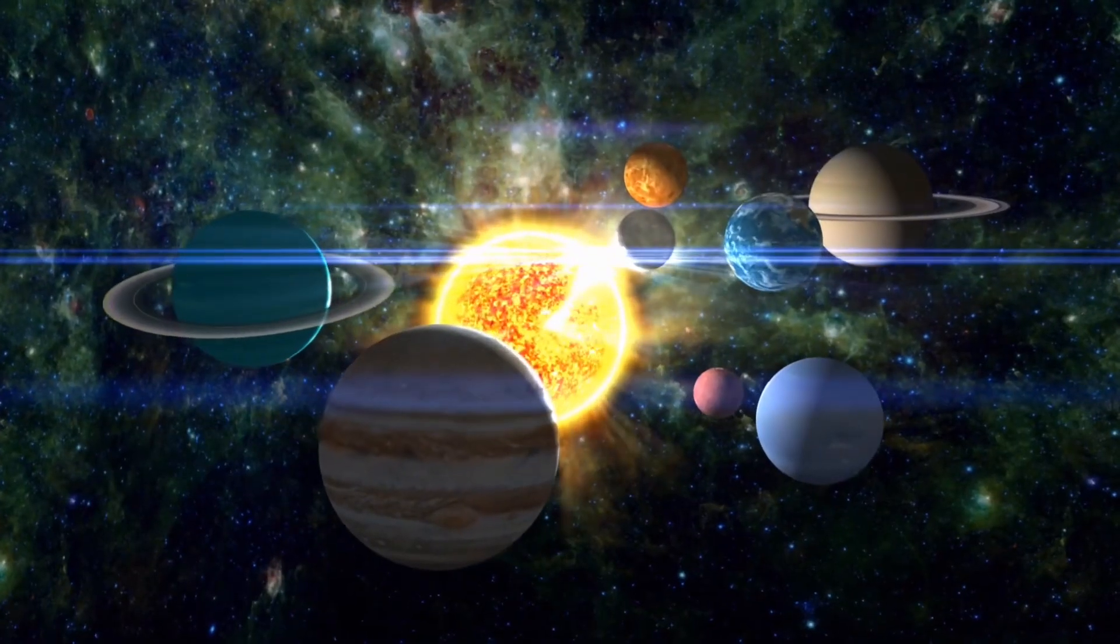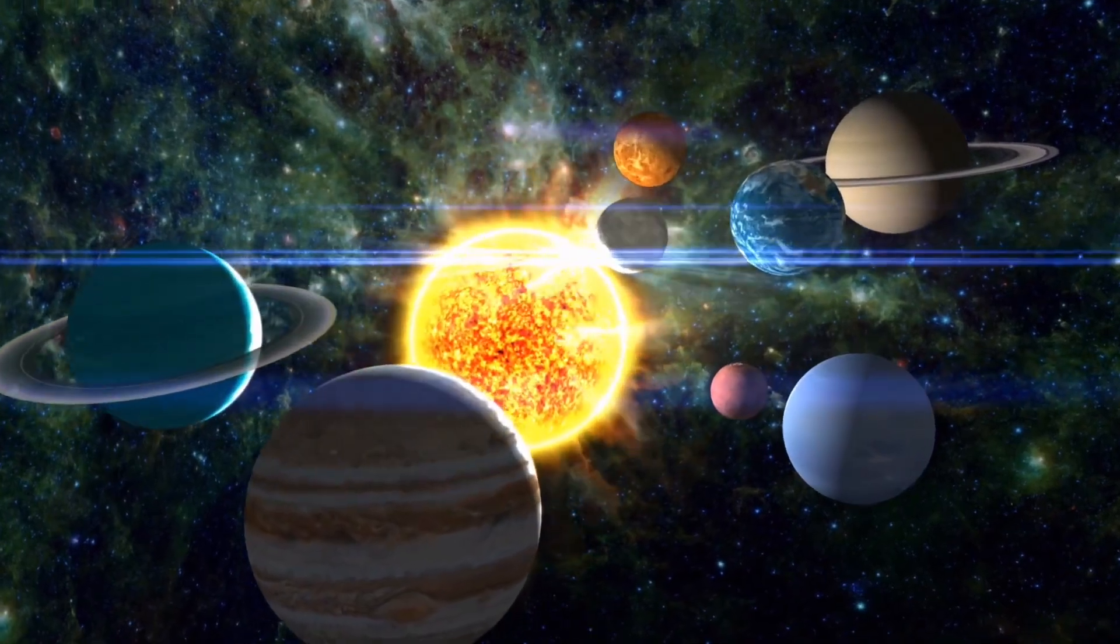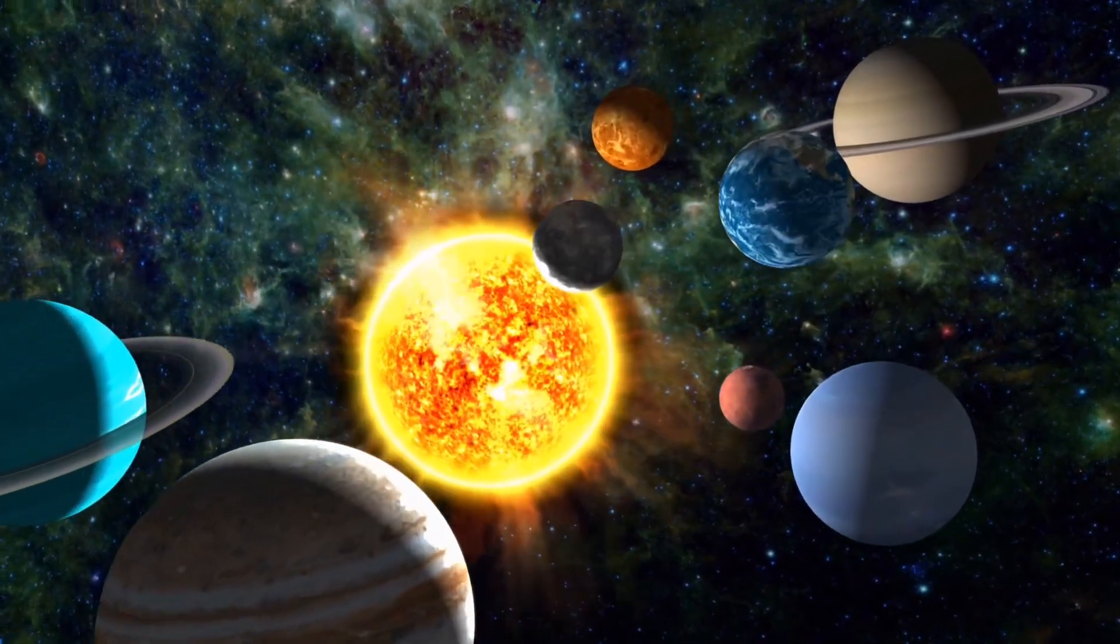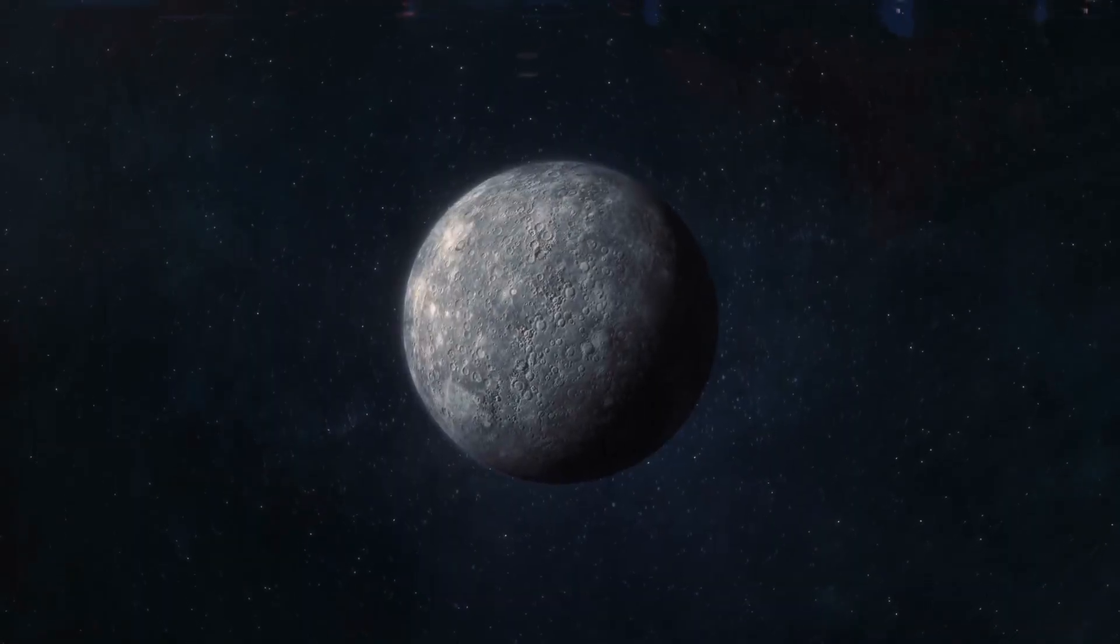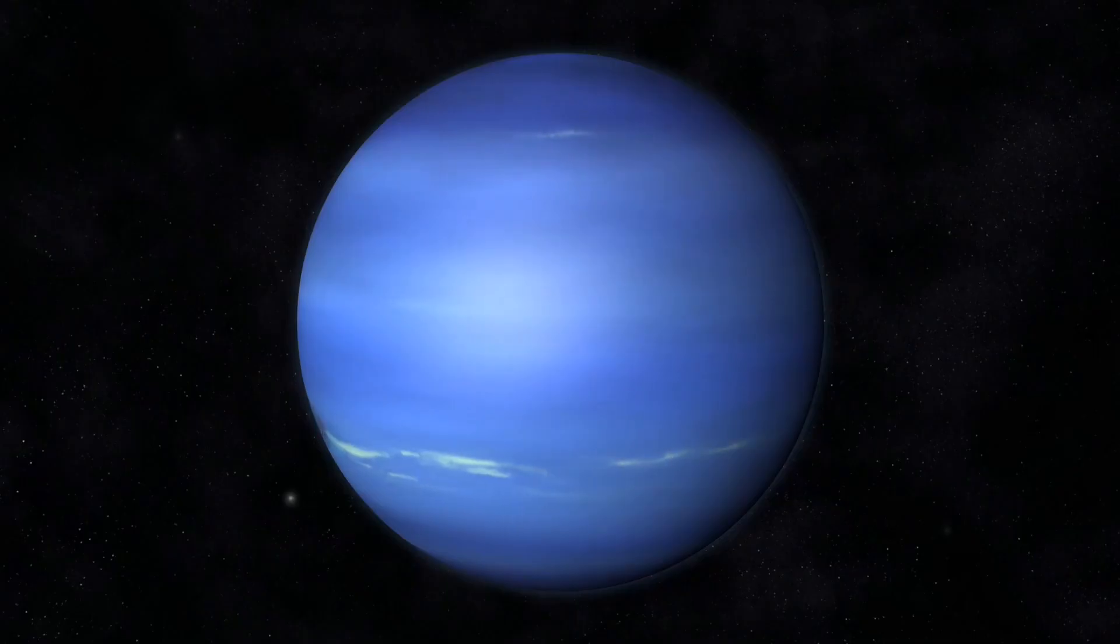Each planet is unique and has its own special features. For example, Mercury is the closest planet to the sun and it's very hot, while Neptune is the furthest planet and it's very cold.